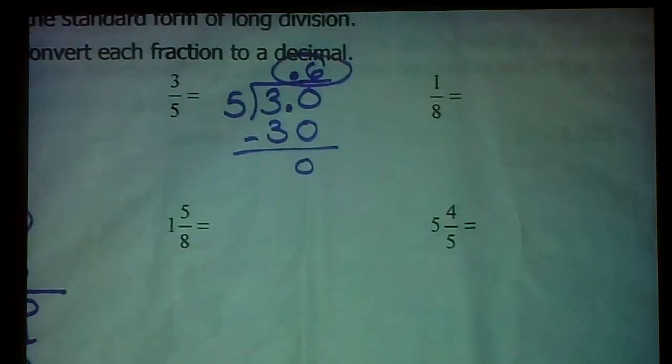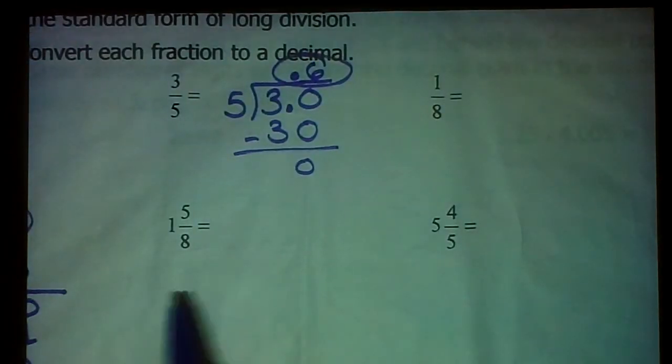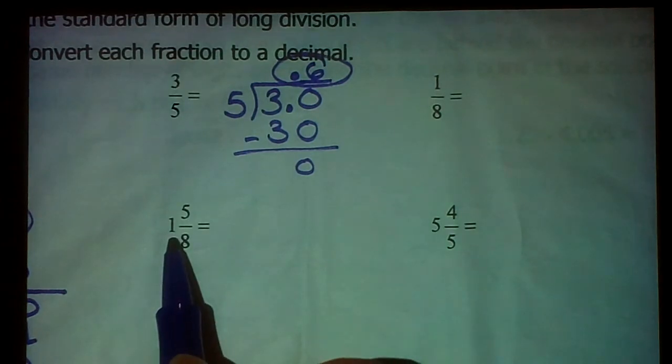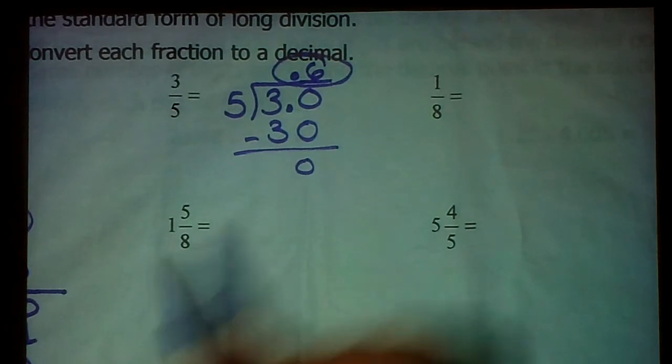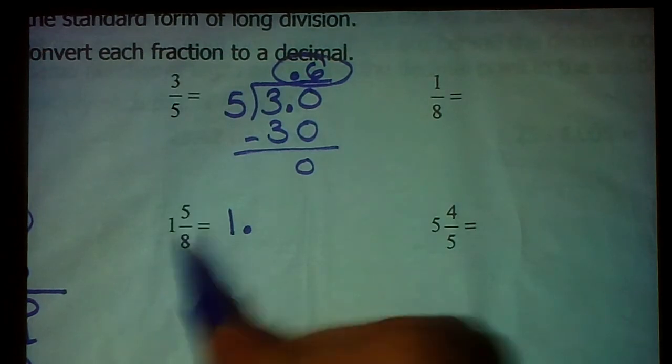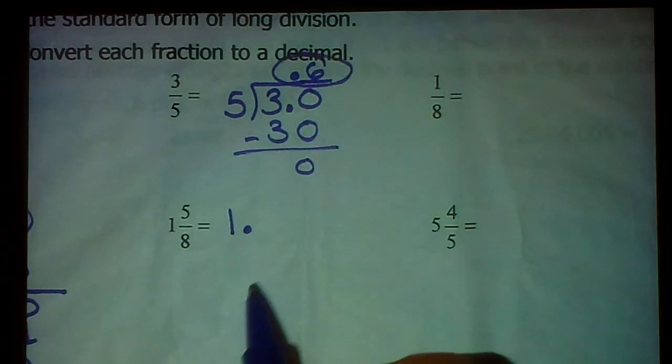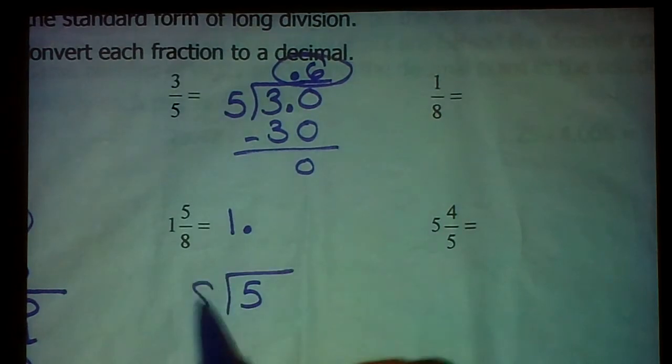Okay. So 1 and 5/8, like Mrs. Trombley just said over in the previous problem, if you have a 1 in front of your fraction, in front of your mixed number, then you know that that's going to be the whole number portion of your decimal as well. So I know I'm going to have 1 point something. I need to figure out what this 5/8 is as a decimal. So that means I need to take 5 and divide it by 8.